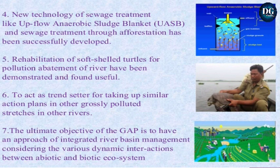Fourth, rehabilitation of soft-shelled turtles for pollution abatement of the river has been demonstrated and found useful. Fifth, to act as a trendsetter for taking up similar action plans in other grossly polluted stretches and other rivers. Sixth, the ultimate objective of the Ganga Action Plan is to have an approach of integrated river basin management, considering the various dynamic interactions between biotic and abiotic ecosystems.